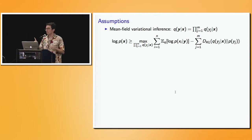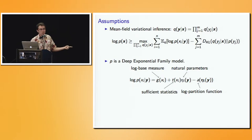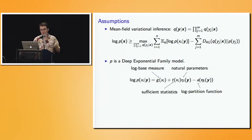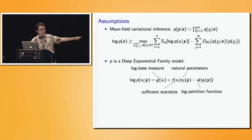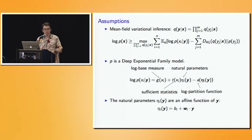First, we're going to make some assumptions to get tools that are rather general. First, we're doing mean field variational inference. Second, we're dealing with deep exponential family models — in this example we only have one layer of latent variables, so it's rather shallow. Really what it means is that the conditional distribution belongs to the exponential family. Lastly, the natural parameters are an affine function of the latent variables — this can be loosened a little bit, but we won't talk about that today.